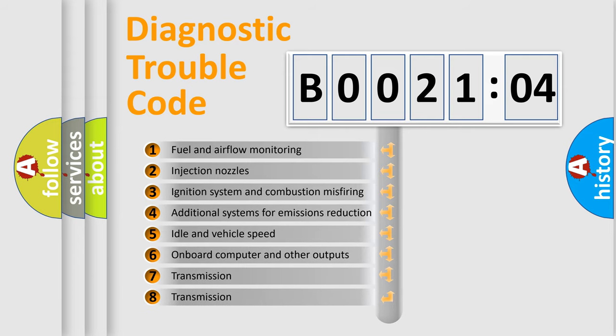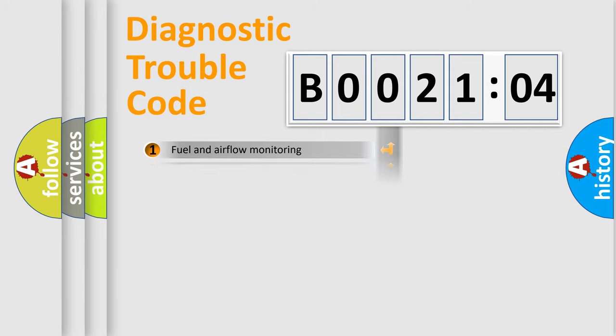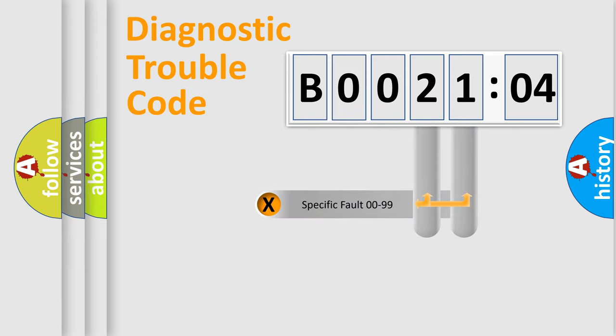The third character specifies a subset of errors. The distribution shown is valid only for the standardized DTC code. Only the last two characters define the specific fault of the group.